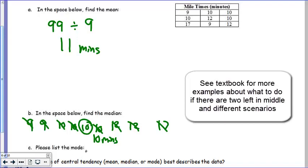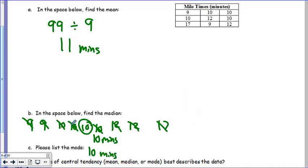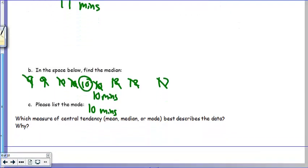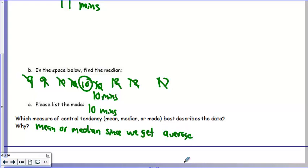The mode is the most common, which was the peak in our graph, and that would also be 10 minutes. Clearly, it's the only one with 4 of them. Now, which measure of central tendency, the mean, median, or mode, best describes the data? Typically, you were looking for the average time. So you want to find the mean or the median. We didn't really want to find the most common time as the mode, even though it ended up being pretty close to the middle. But that's not always the case. So for this question, we kind of would take either the mean or the median since we get the average.